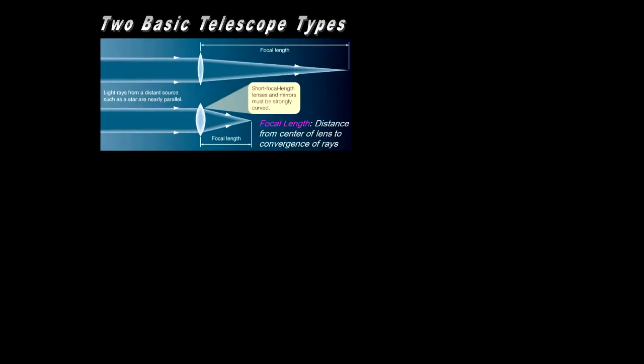There are two basic telescope types. The easiest to think of is just light coming through a lens. Parallel rays, like from a star, will converge at a focal point, and the distance from the lens to that point is called the focal length. If the lens is curved more, it'll bend the light more, and therefore the focal point will be less distance, resulting in a smaller focal length.